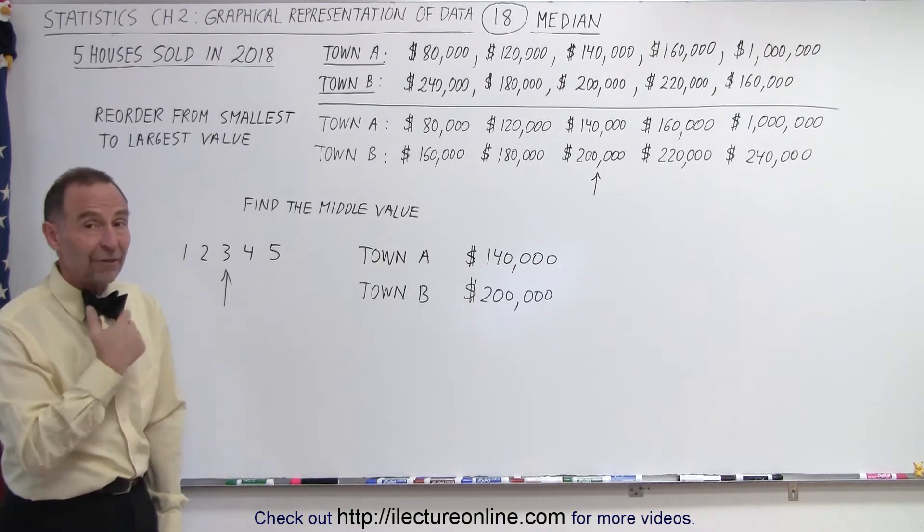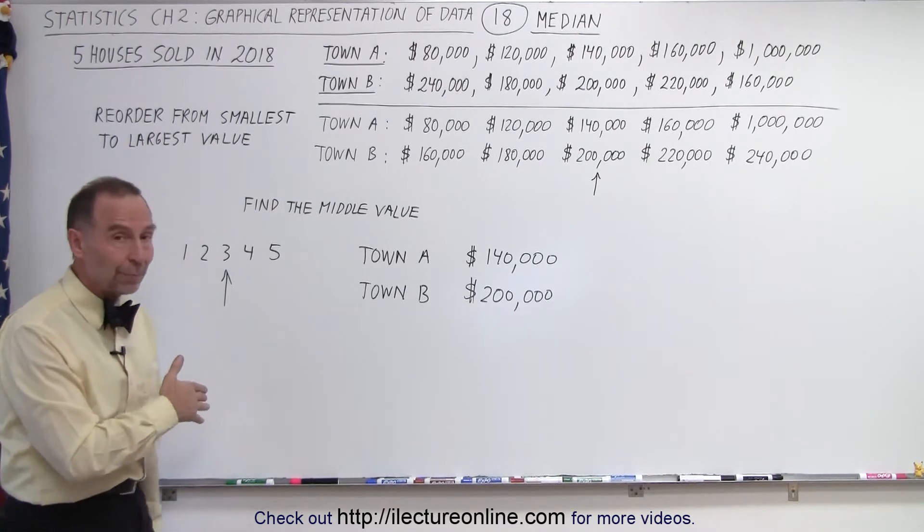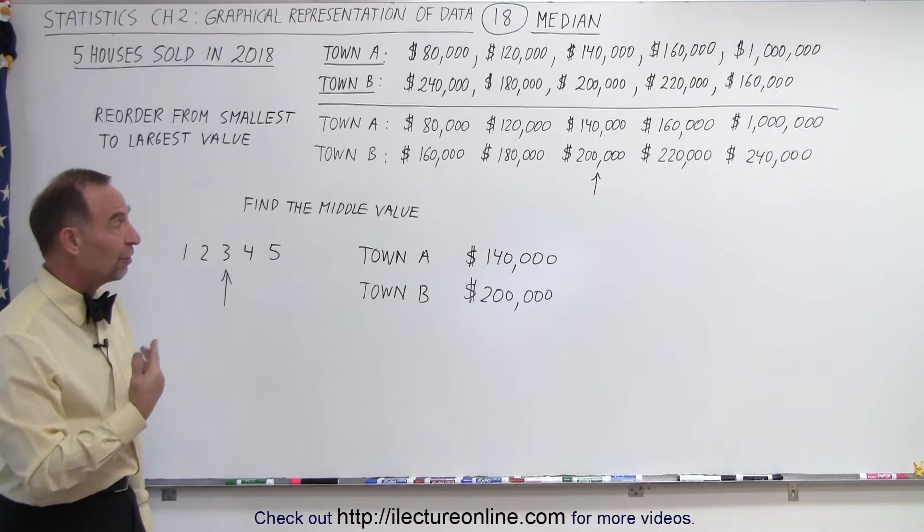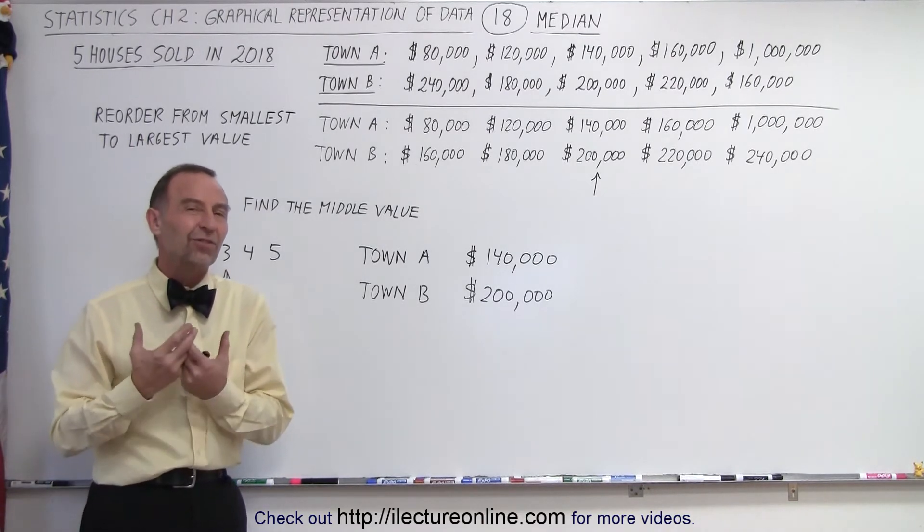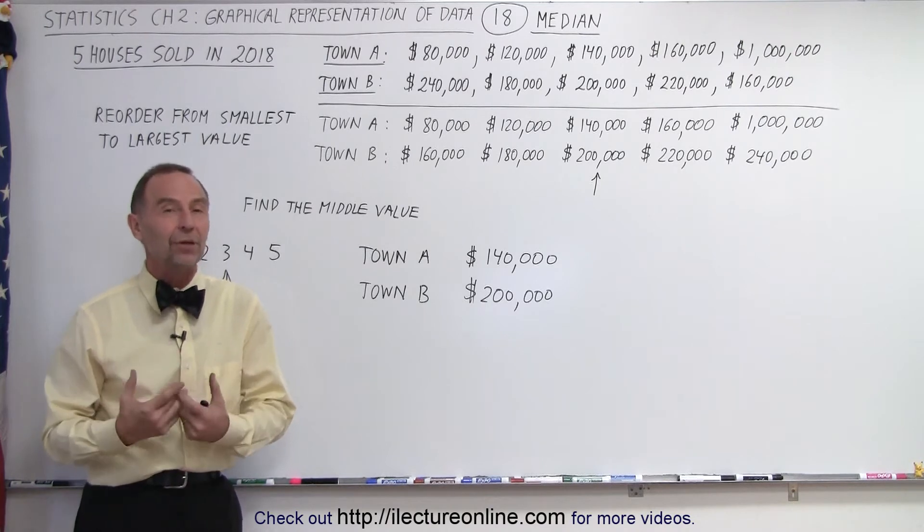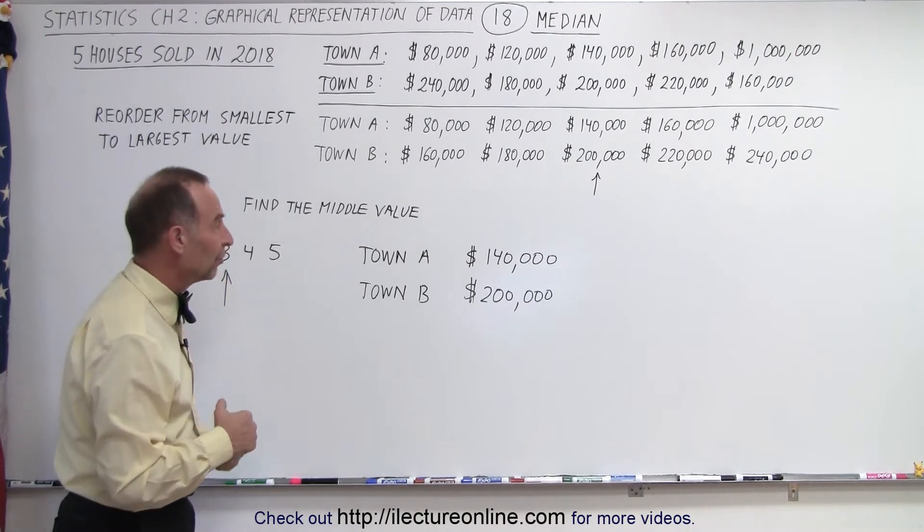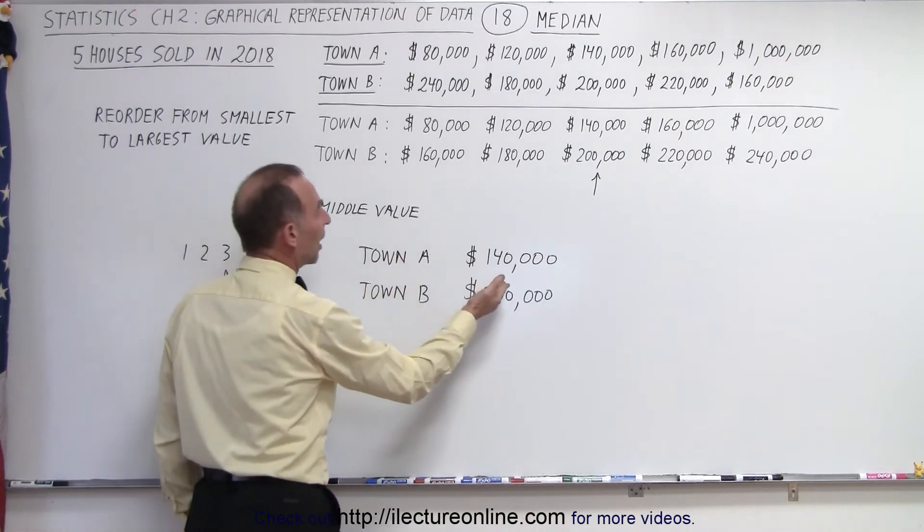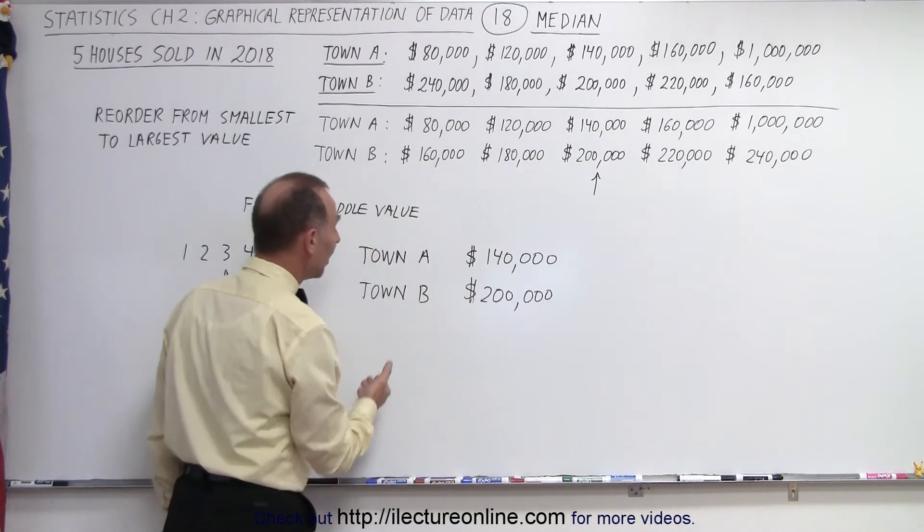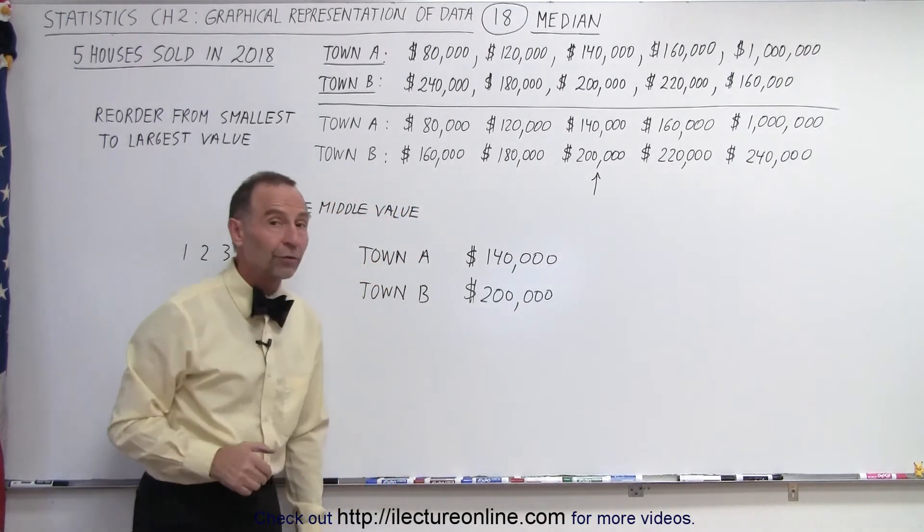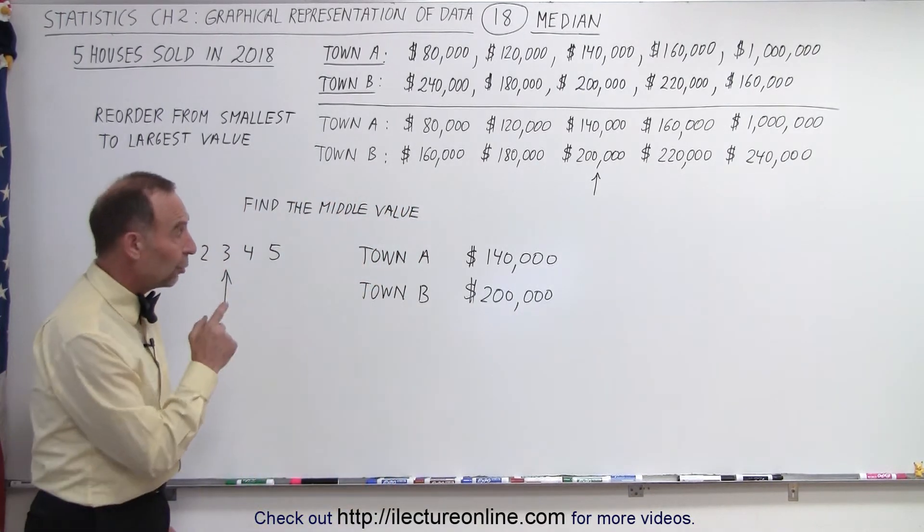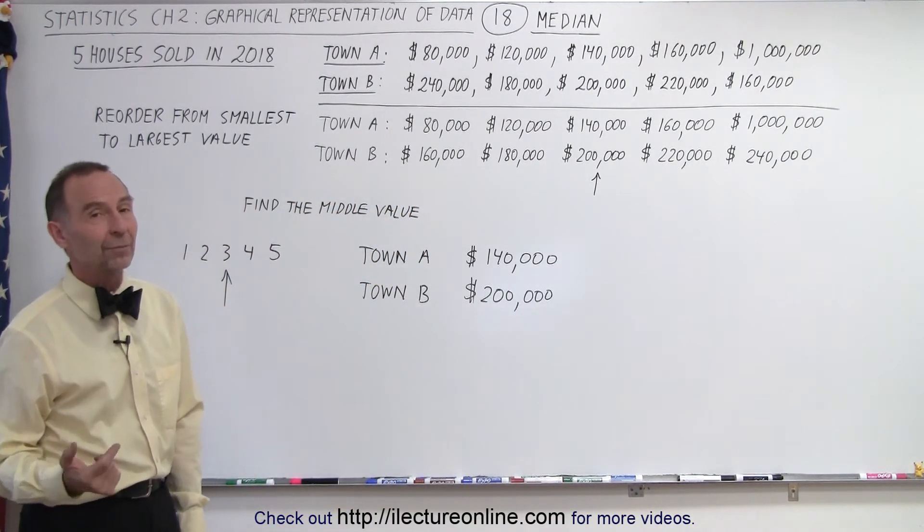So you can see that the value for the median compared to the mean or the average is very different. The median gives you a much better sense of what the typical house price is like. For town A the typical house price would be the median of $140,000 and for town B the typical house price would be $200,000. So if you're looking to buy a cheaper house you want to go visit town A instead of town B.